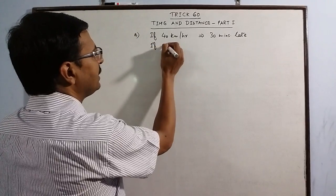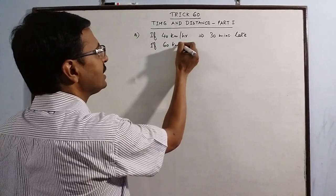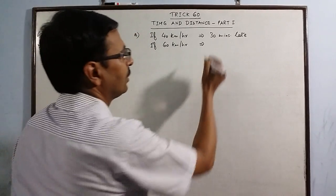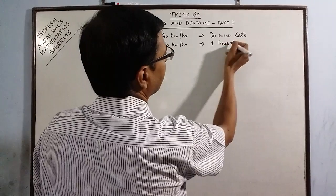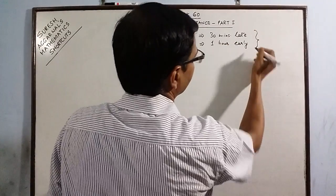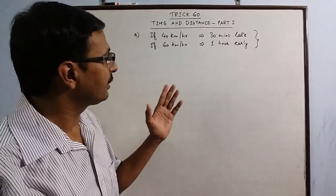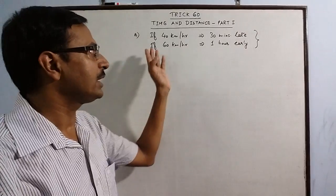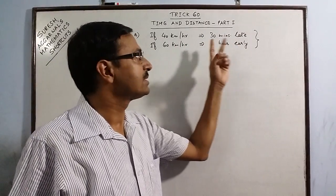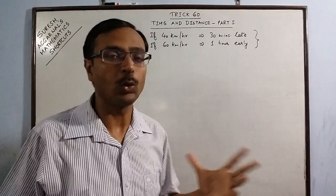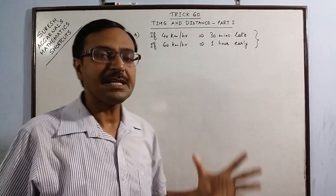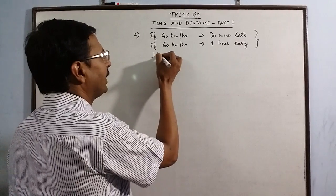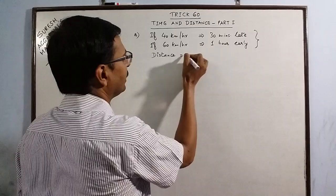the same car reaches its destination 1 hour early. The routine time taken is not given. We are just comparing the routine time with two conditions. If the speed is 40, then the time is 30 minutes more. If speed is 60, then it reaches 1 hour early. Now, we are required to find the distance of the journey.